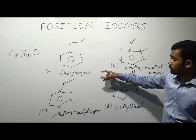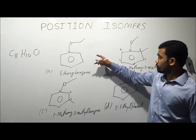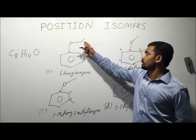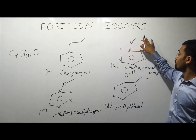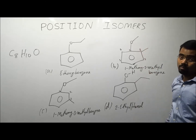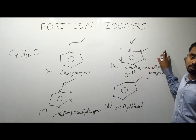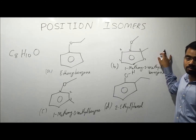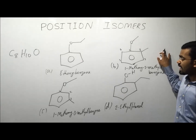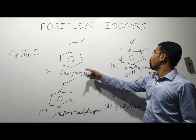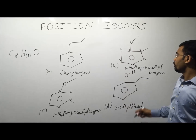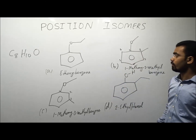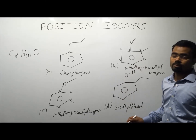In A, the nature of the functional group is ether. In B, the nature of the functional group is also ether. But the number of carbon atoms on the other part of the oxygen is 2 in A, while it is only 1 in B. Therefore, A and B are not considered position isomers because the number of carbon atoms is changed. However, B and C are considered position isomers because the nature of the functional group is the same (ether) and only the position of the substituent is changed. Therefore, B and C are position isomers.